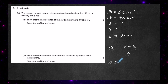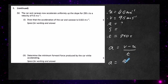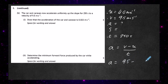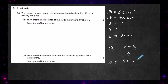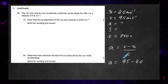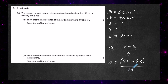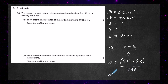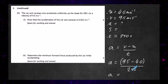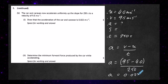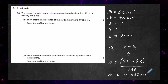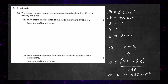Plugging in the numbers: acceleration equals 9.5 minus 4.0, divided by 250 seconds. This gives an acceleration of precisely 0.022 metres per second squared — confirming the acceleration of the car and caravan up the slope.